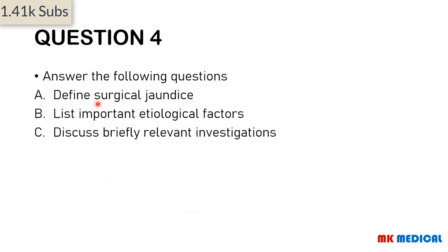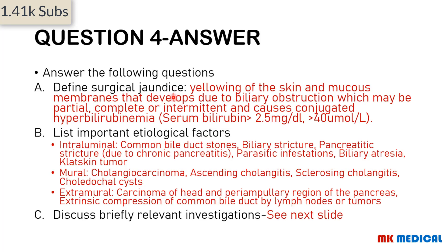Moving on to question 4: define surgical jaundice, list important etiological factors, and discuss relevant investigations. Surgical jaundice — also referred to as cholestatic jaundice, conjugated hyperbilirubinemia, or obstructive jaundice — is yellowing of the skin and mucous membranes due to biliary obstruction (partial, complete, or incomplete), causing conjugated hyperbilirubinemia with a value greater than 2.5 mg/dL or greater than 40 micromoles per liter.